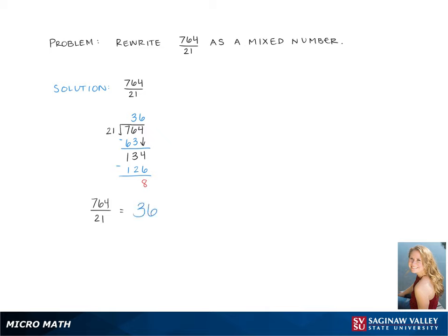The numerator in the fraction of our mixed number is our remainder from long division, which is 8. The denominator stays the same as the original fraction, which is 21.